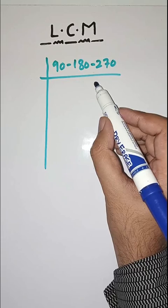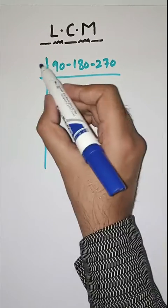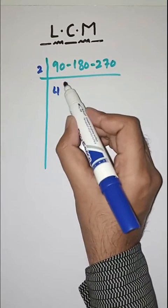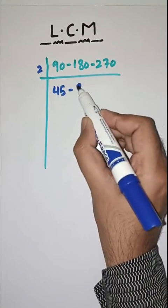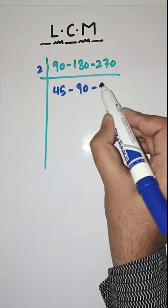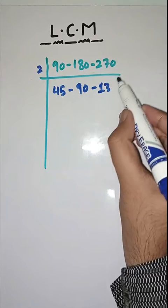So we start with 2 as our first prime factor. Dividing 90, 180, and 270 by 2, we get 45, 90, and 135.